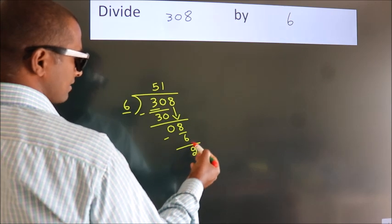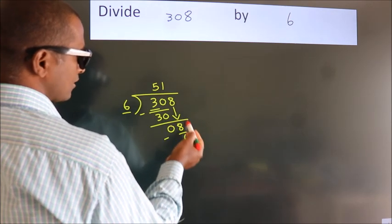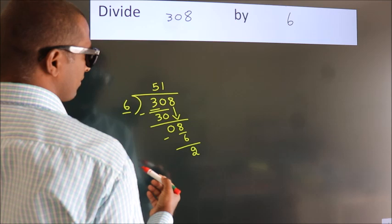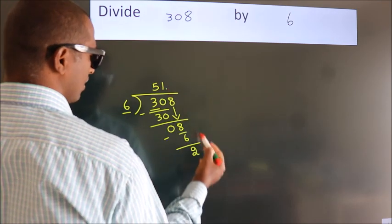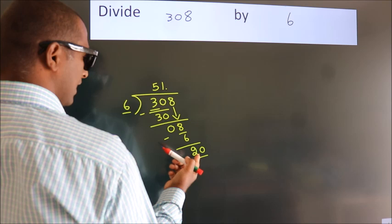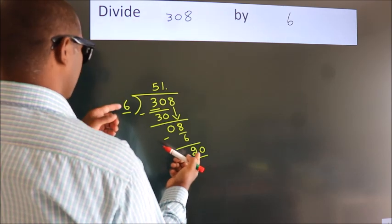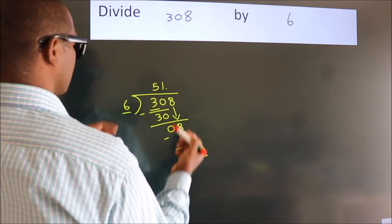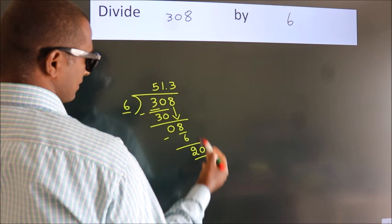After this, no more numbers to bring down. So what we do is, we put a dot, take 0. So 20. A number close to 20 in 6 table is 6 threes, 18.